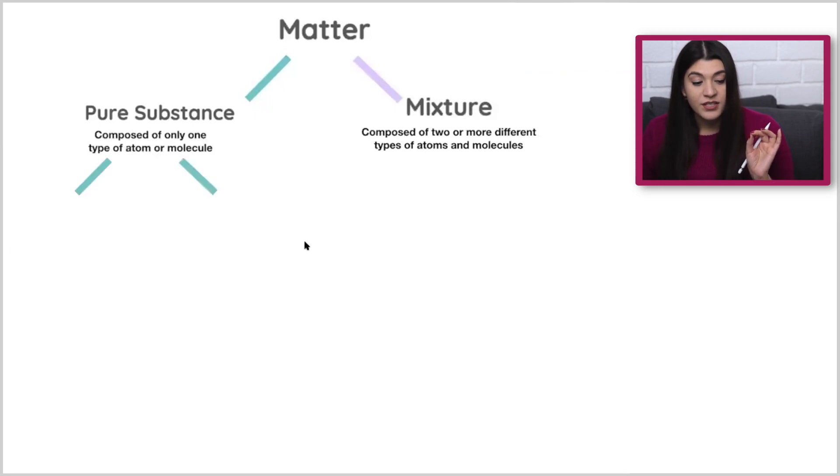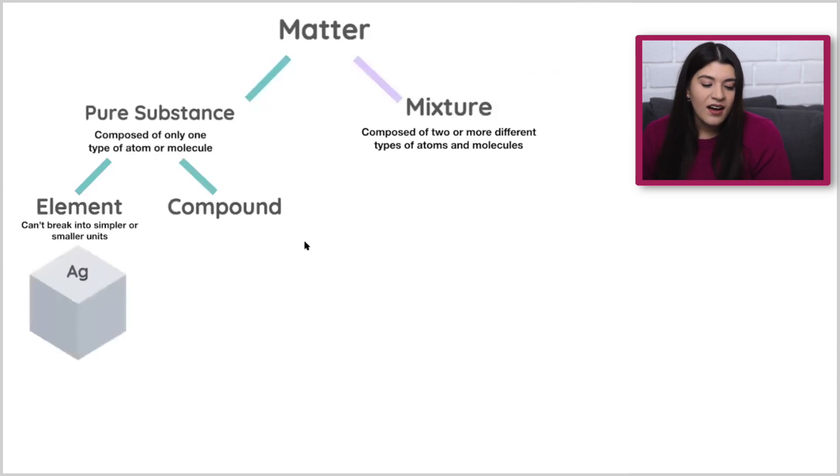So I'll start off with the different types of pure substances. So an element, a pure element, is something going to be like iron or let's say silver in this case, Ag. Anything that's just by itself. Think of an element as I can't break it down anymore, it's already in the simplest form.